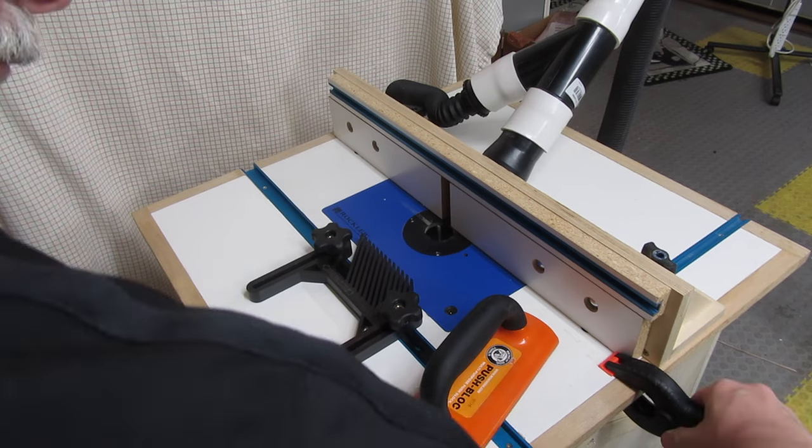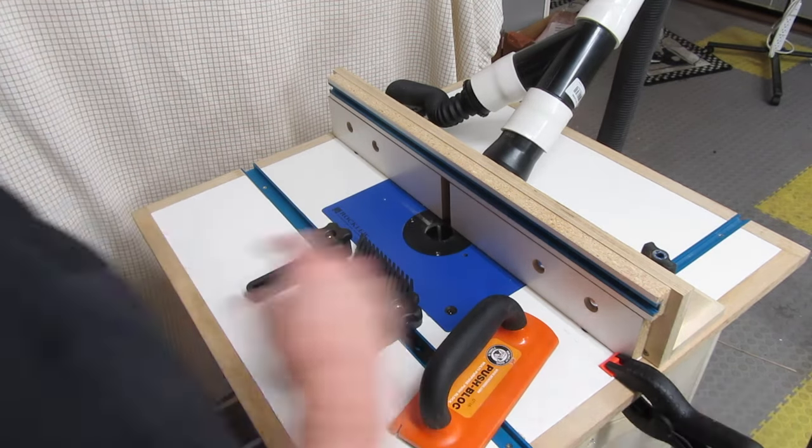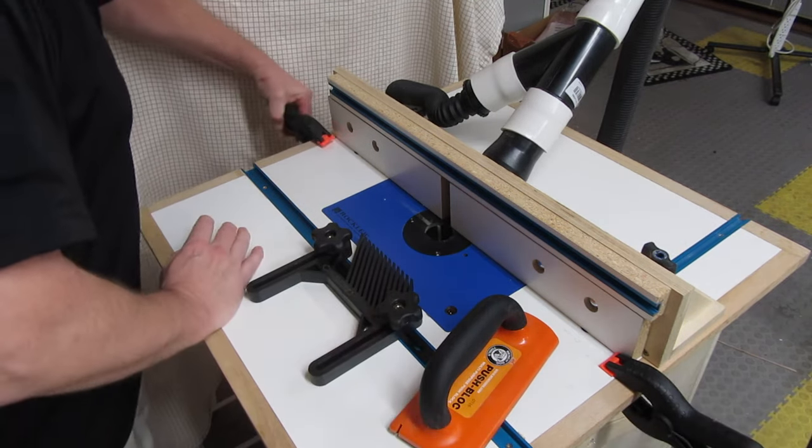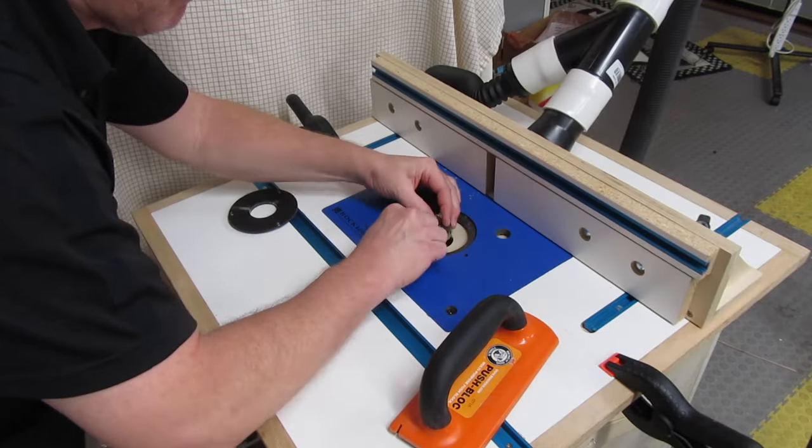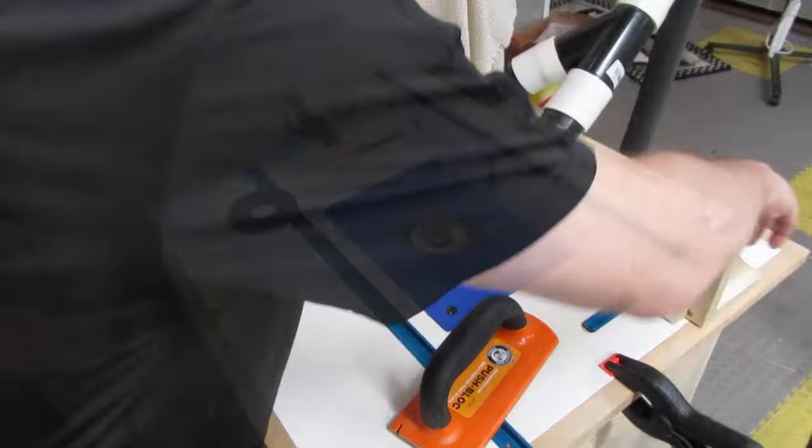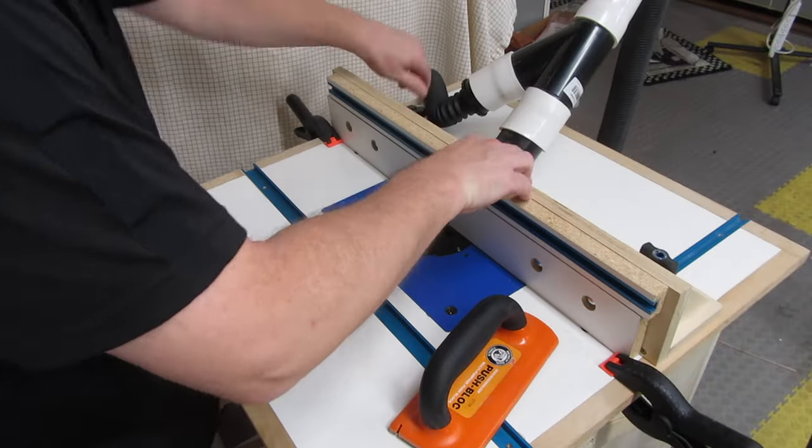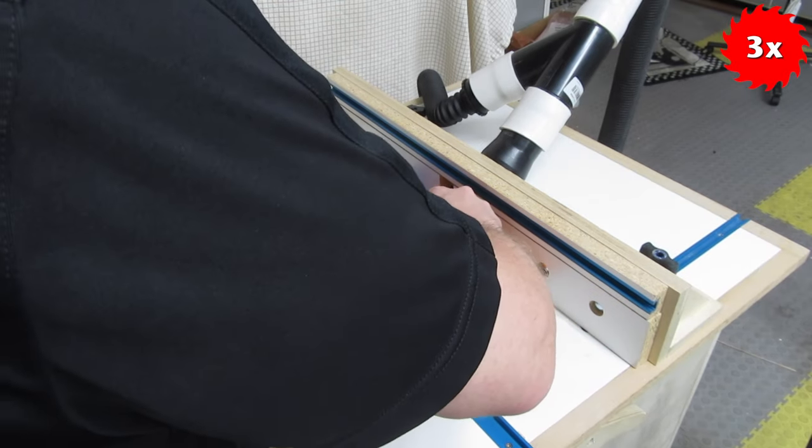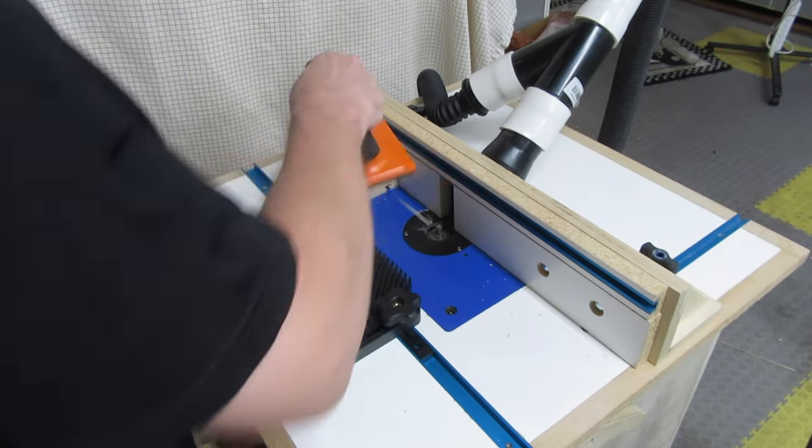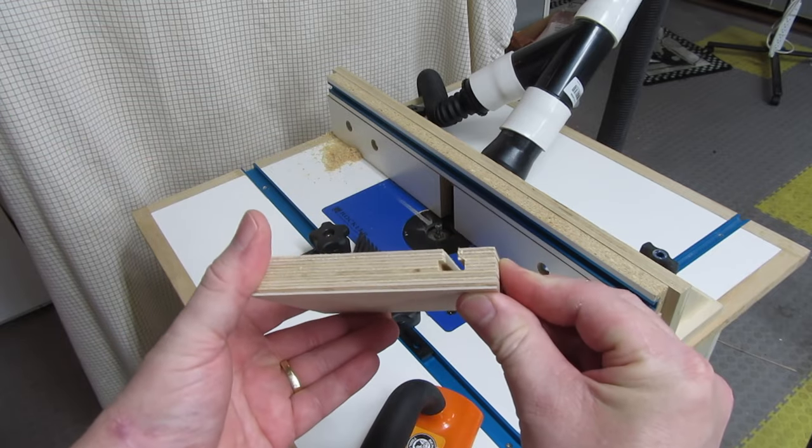Now it's time to put in the T-slot bit, and for that, I have to move my fence. So I use a couple of clamps to mark where the fence is before I move it. Then I put the Yanico bit in the router and replace the fence using the clamps to reposition it. I set the height to three-eighths of an inch. Then I cut the slot, and it goes quite smoothly. And here's what it looks like.